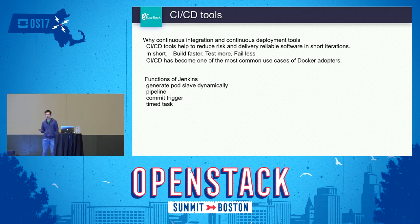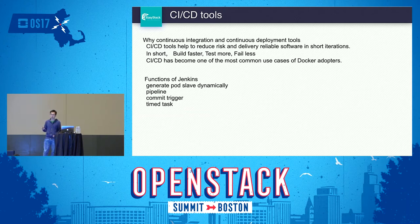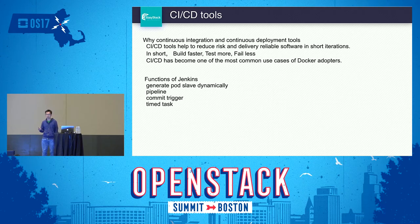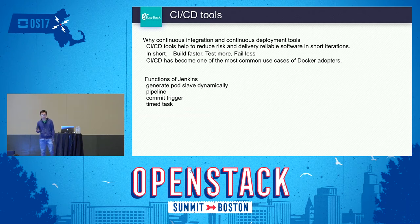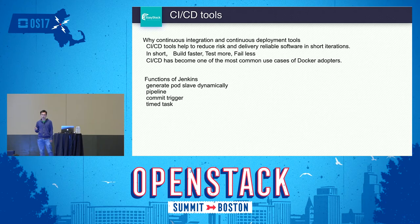We choose Jenkins as our CI/CD tool because it has lots of plugins and provides rich features. It can generate a pod slave to run a job dynamically and destroy the pod when the job is complete. You can create a pipeline, not just a single job. A new commit can trigger a new job dynamically, and you can also define scheduled time tasks.